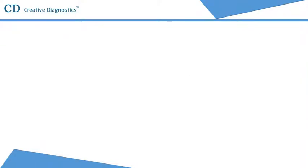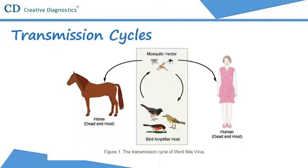West Nile virus is maintained in nature in a cycle involving transmission between birds and mosquitoes. Some infected birds can develop high levels of virus in their bloodstream, and mosquitoes can become infected by biting these infected birds. After about a week, infected mosquitoes can pass the virus to more birds when they bite. Mosquitoes become infected when they feed on infected birds, which circulate the virus in their blood for a few days, and the virus eventually gets into the mosquito's salivary glands.